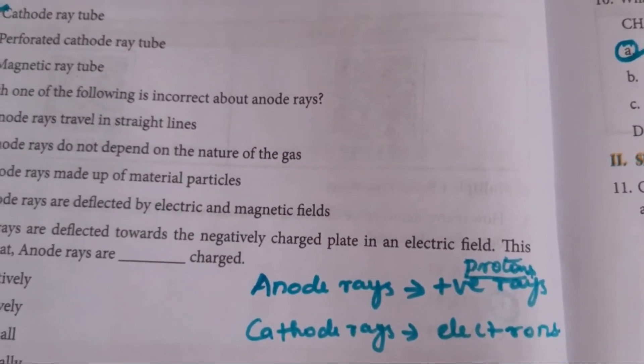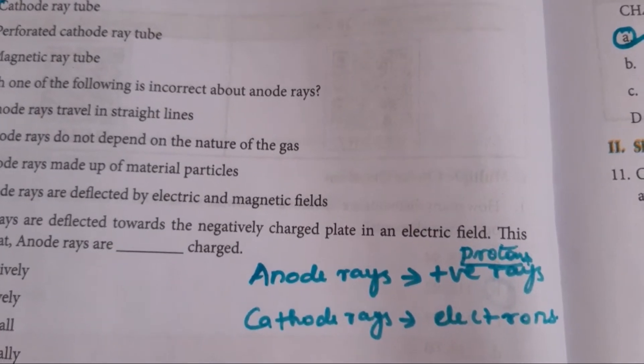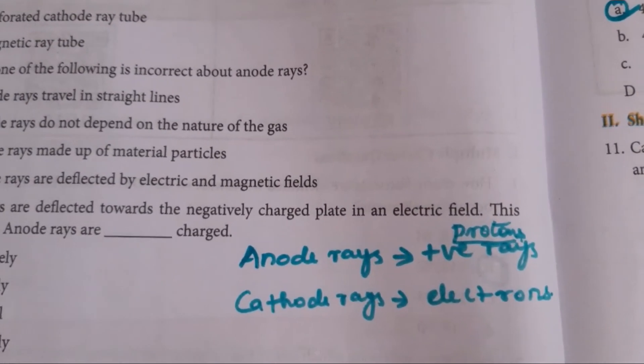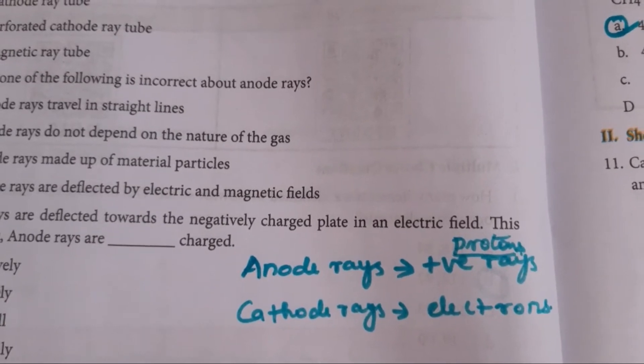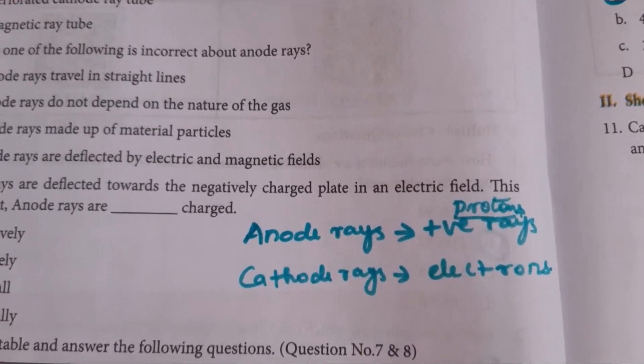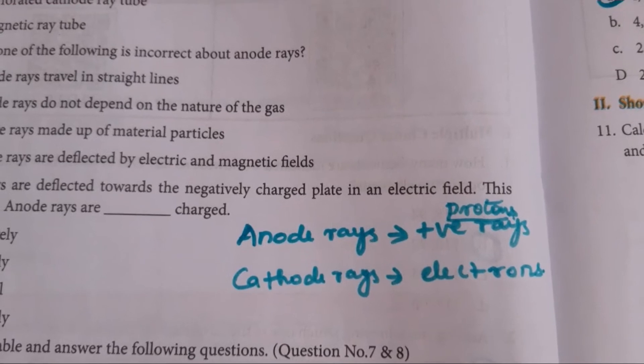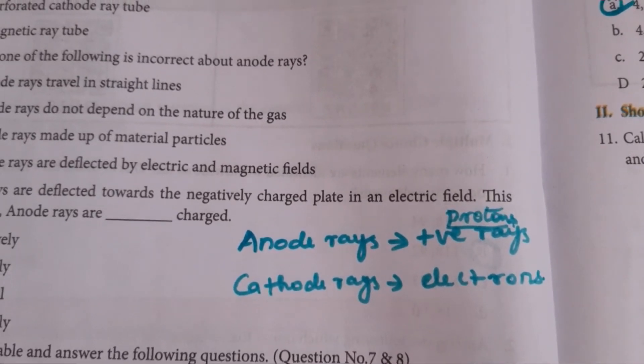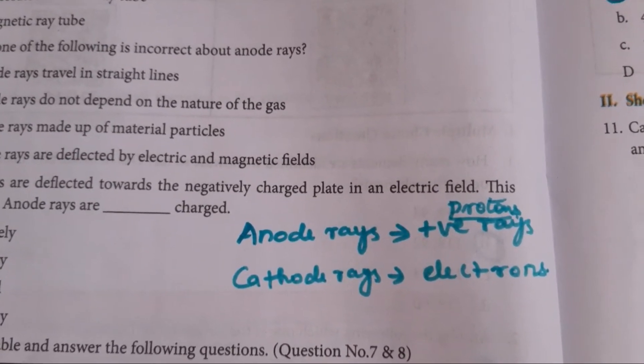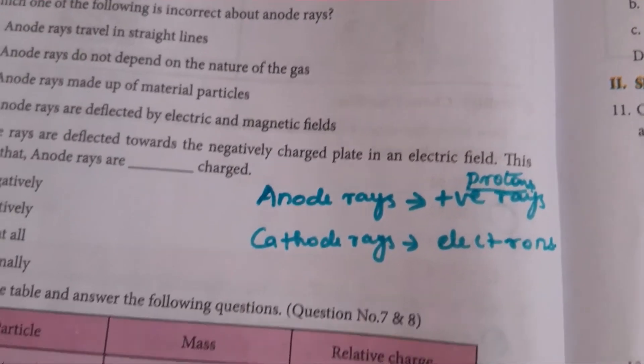Which of the following is incorrect about anode rays? So for this also, you just go through the properties of anode rays. And here, the wrong answer is, incorrect answer is, anode rays do not depend on the nature of the gas. But anode rays depend on the nature of the gas. So B is the answer.